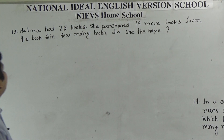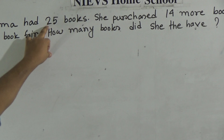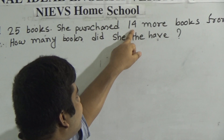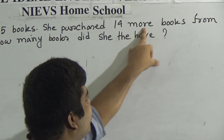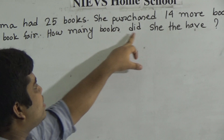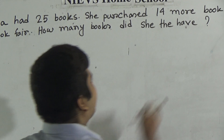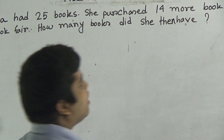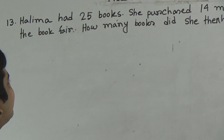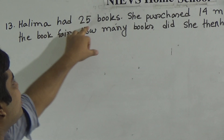At first I read the question. Halima had 25 books. She purchased 14 more books from the book fair. How many books did she then have? My dear students, how many books did she then have? That means Halima had 25 books.